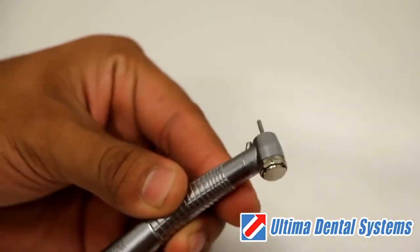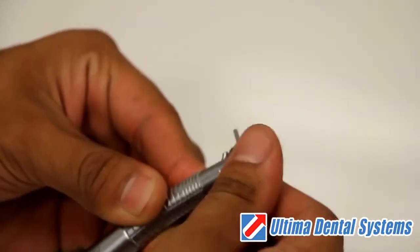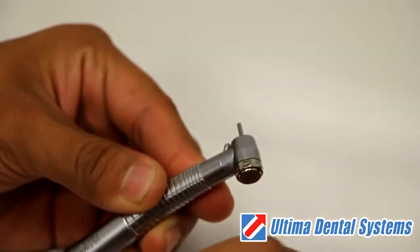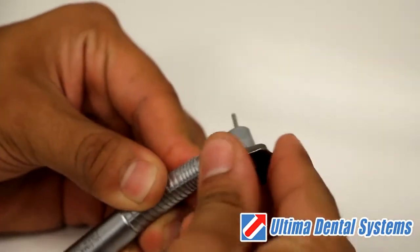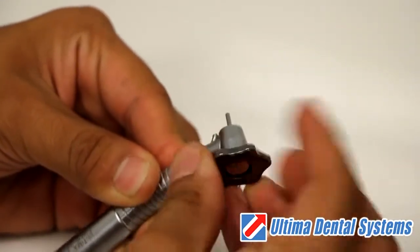Using the start tool that was supplied with the purchase of your high-speed handpiece, carefully remove the handpiece end cap, making sure not to strip the end cap threads.